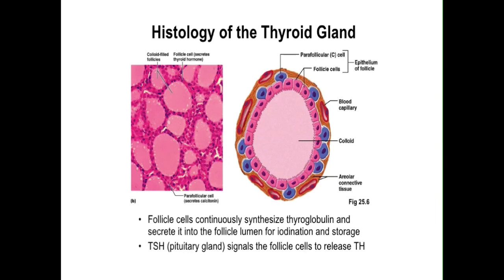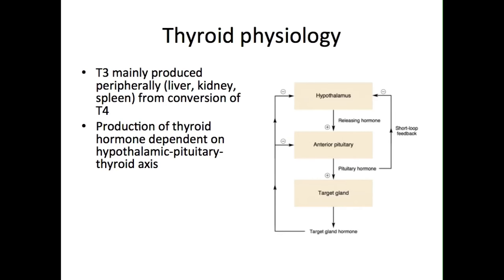Calcitonin is a hormone which is involved in the metabolism of calcium, which is discussed in greater detail in a separate podcast on this website. As with most hormones, control of the release of thyroid hormone is achieved via a feedback mechanism — in this case, the hypothalamic-pituitary-thyroid axis.